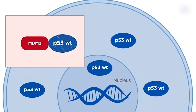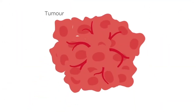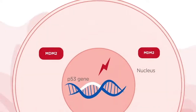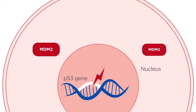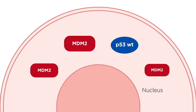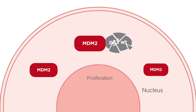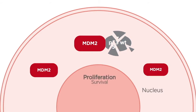MDM2 is a protein that binds to p53 protein and controls its activity by facilitating its degradation. In many cancers, the gene encoding p53 is frequently mutated or deleted, or wild-type p53 function is inactivated by high MDM2 levels, leading to uncontrolled cell proliferation and survival.